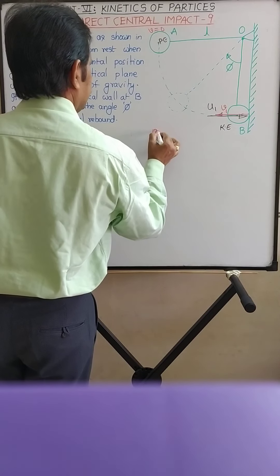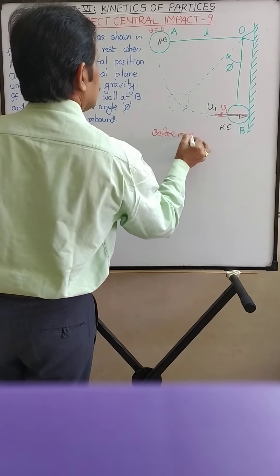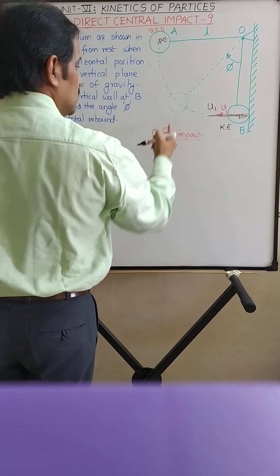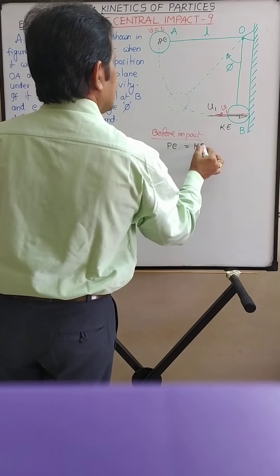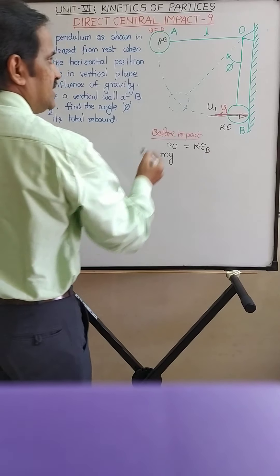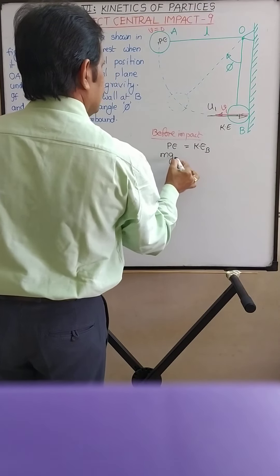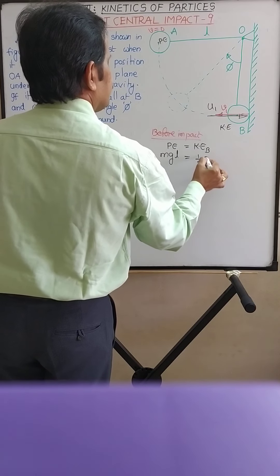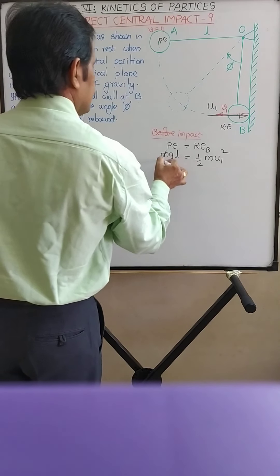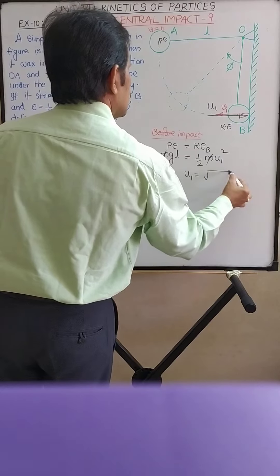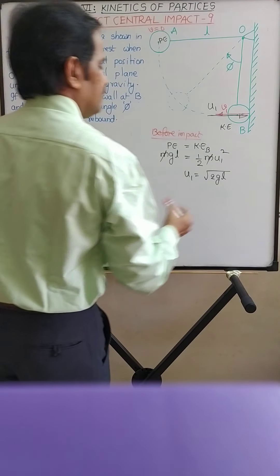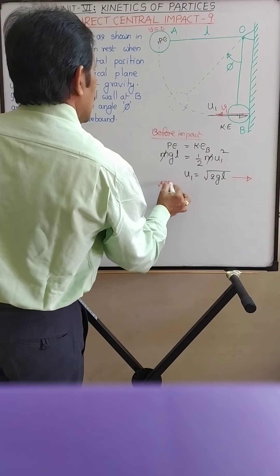Before impact, equating the potential energy of the pendulum at position A to the kinetic energy at position B: mg·h equals half·m·U1², where h is equal to the length of the pendulum L. So U1 is the velocity of the pendulum before impact. This gives U1 = √(2gL). The direction of this velocity is towards the right.